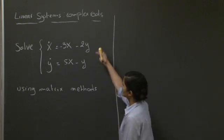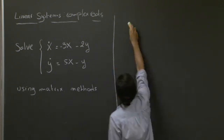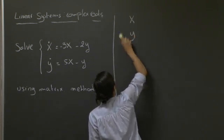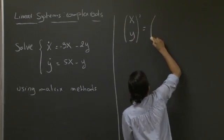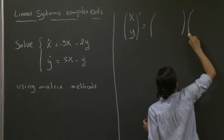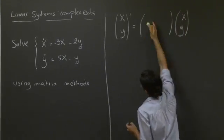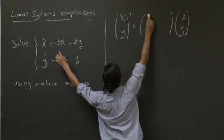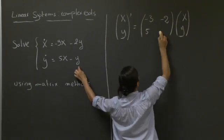Welcome back. So the first step is to write this system in matrix form. So we introduce the vector x, y, the matrix multiplying column vector x, y again. The coefficients are going to be minus 3, minus 2, 5, minus 1.